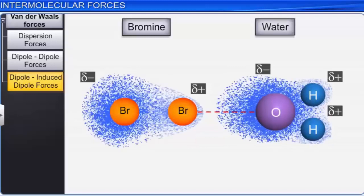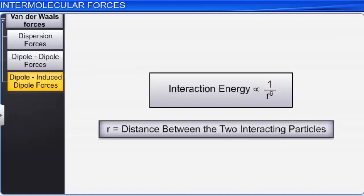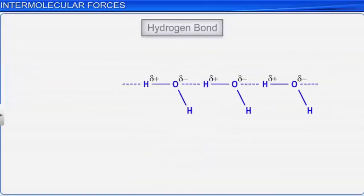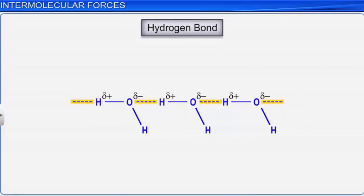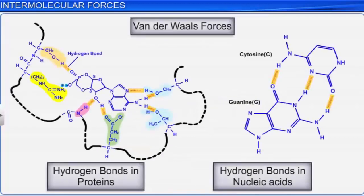In this case also, interaction energy is inversely proportional to the sixth power of the distance between the two interacting particles. A special case of dipole-dipole interaction called hydrogen bond exists in molecules with highly polar N-H, O-H, or H-F bonds. This intermolecular force is stronger than the van der Waals forces of attraction, having interaction energy of the order of 10 to 100 kJ per mole. Therefore, hydrogen bond is a powerful force in determining the structure and properties of many compounds such as proteins and nucleic acids.